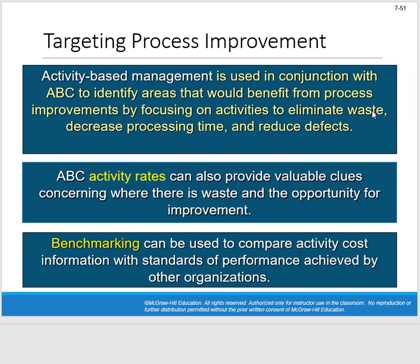When we think of process improvement and how to fix our company — thinking back on Baxter Battery — how do we go from having negative $2 million net income? Traditional costing fell short and didn't give us the information we needed to really scrutinize that question, where ABC gave us data we could actually look at and make decisions. ABC used in conjunction with activity-based management helps identify areas that benefit from process improvements by focusing on activities to eliminate waste, decrease processing time, and reduce defects.